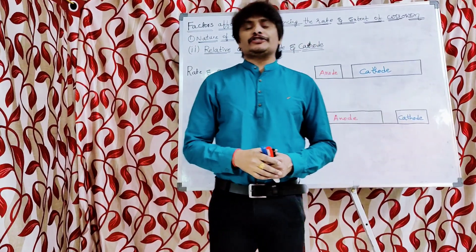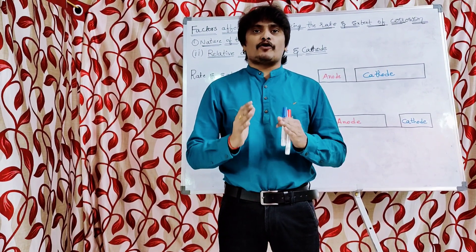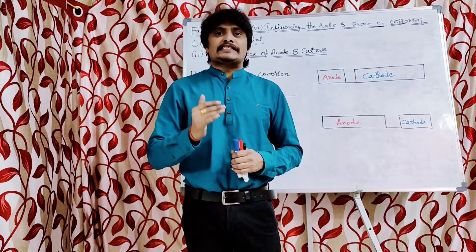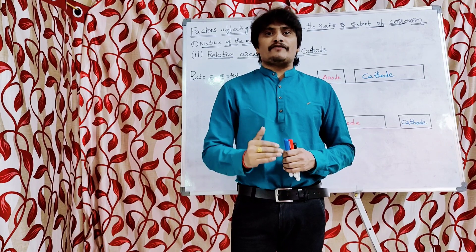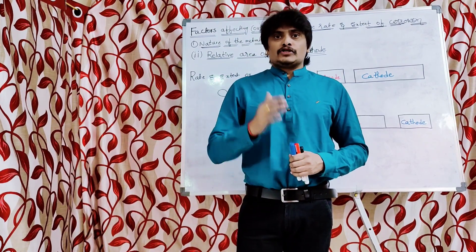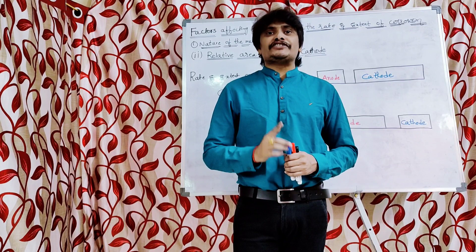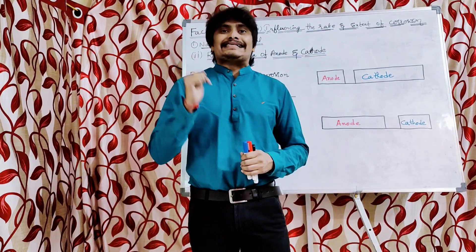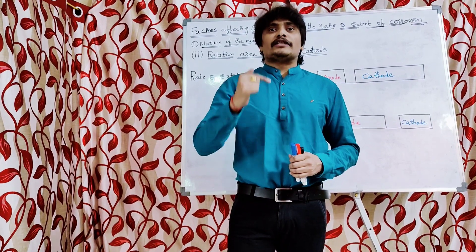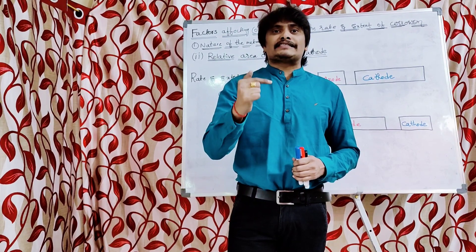Hi students, as a part of corrosion, today I am going to make a video on factors affecting or influencing the rate and extent of corrosion. This is part two of this particular topic — part one is given in the description, please watch that before this video. We were discussing about the nature of the metal, which is the broader category of factors affecting corrosion. In the previous video we discussed the galvanic series, and the second sub-factor under the nature of the metal is the relative area of anode and cathode.